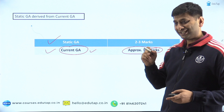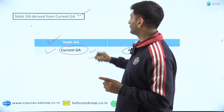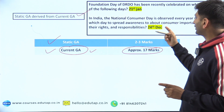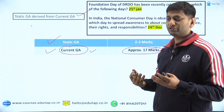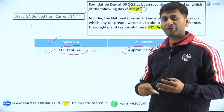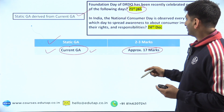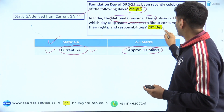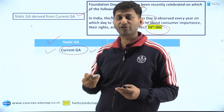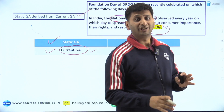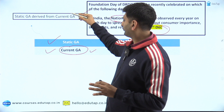In SEBI also, it is clearly visible that your static GA is derived from current GA. For example, there was one question on which day the foundation day of DRDO is celebrated — that is 21st January. The exam was somewhere in February and this question is from January. Then, national consumer day falls on which day — the answer was 24th December. Again, a date just observed within three to four months of your exam. So in SEBI also, static GA is clearly being derived from current GA.